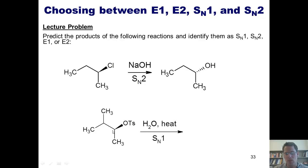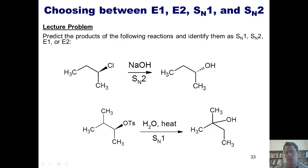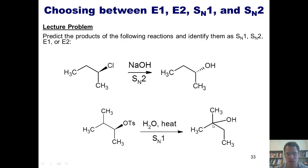The tosylate takes off, giving me a carbocation intermediate. A hydride shift will occur, with the hydrogen at this position moving over to plug that hole, giving me a more stable tertiary carbocation intermediate. The water nucleophile then comes in — oxygen first, then gets deprotonated later — to give me this product. Any stereochemistry present in the starting material is completely lost, as the nucleophile can attack the carbocation from both the front and the back in a 50-50 mixture.